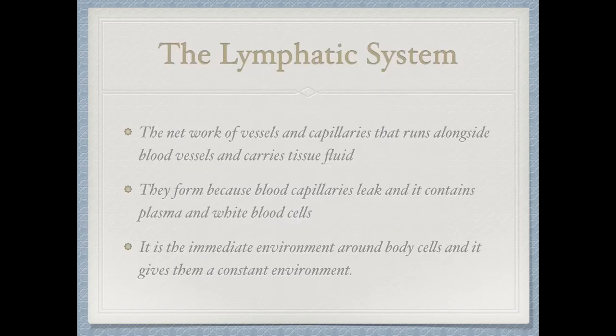Now we come to the last part of the unit: the lymphatic system. The lymphatic system is a network of vessels and capillaries that runs alongside the circulatory system and carries tissue fluid. Tissue fluid forms because blood capillaries leak, and it contains plasma and white blood cells. The tissue fluid surrounds every single tissue in the human body, providing the immediate environment around the body cells and giving them a constant environment to allow them to work faster and more efficiently. The walls of the capillaries have tiny holes in them which causes blood to leak out. White blood cells can also leak out because they can change their shape and squeeze through, but red blood cells are too big to pass through.